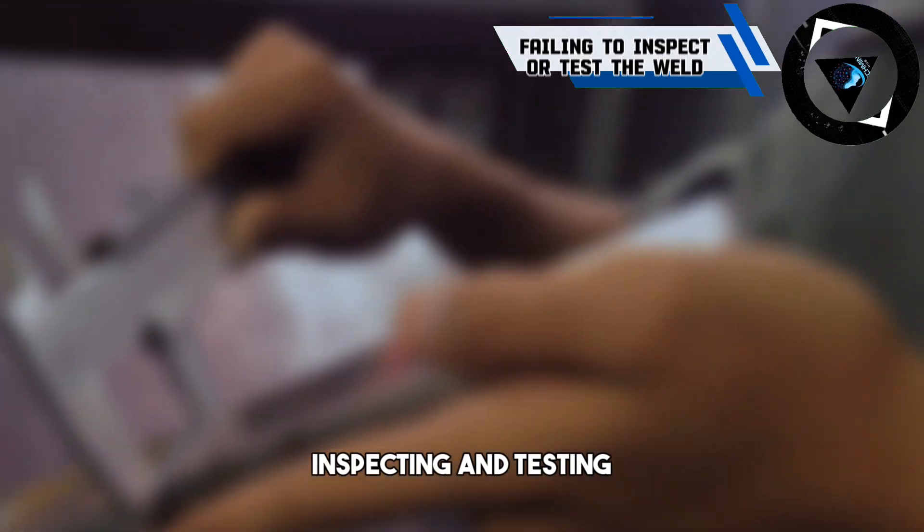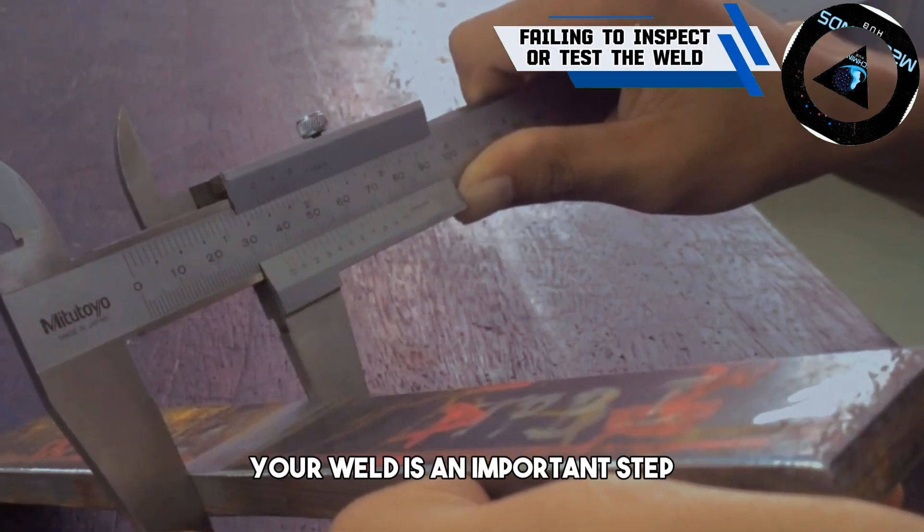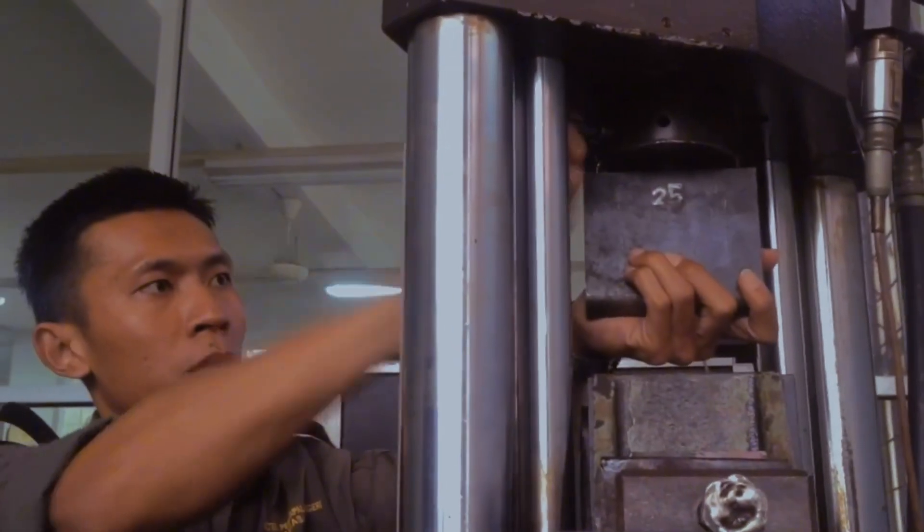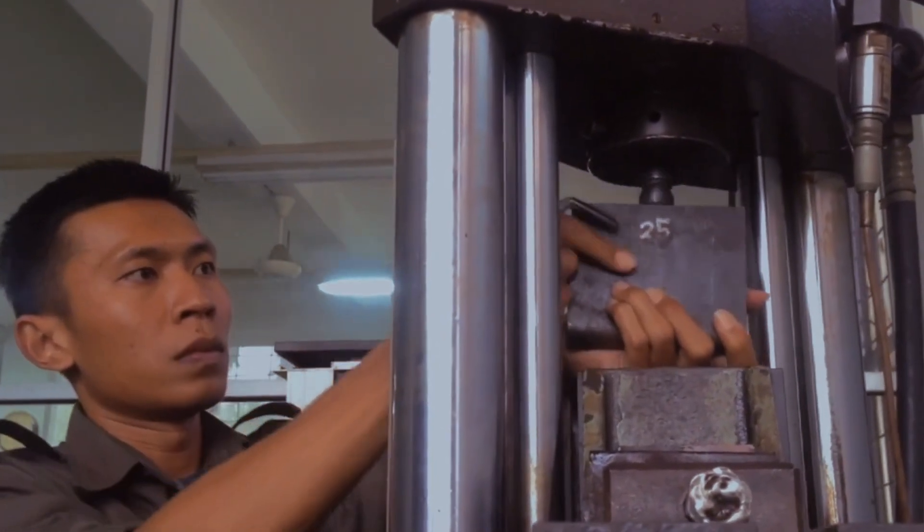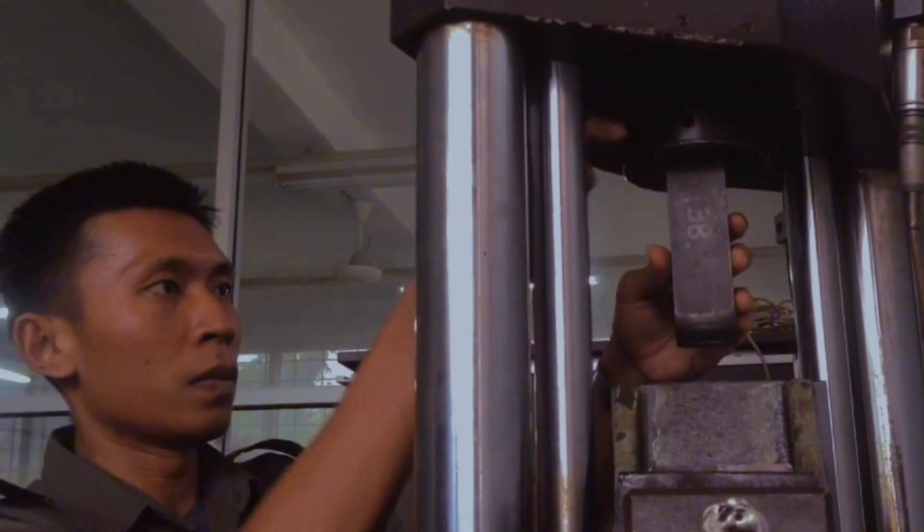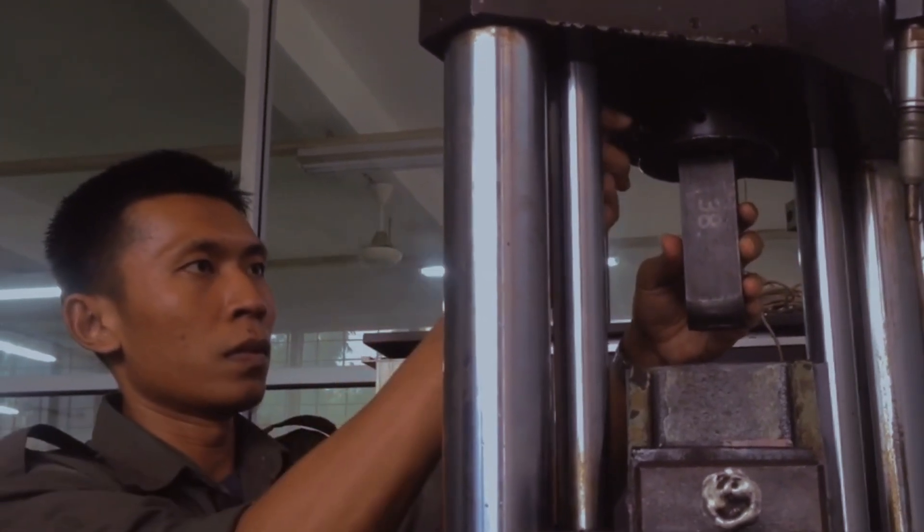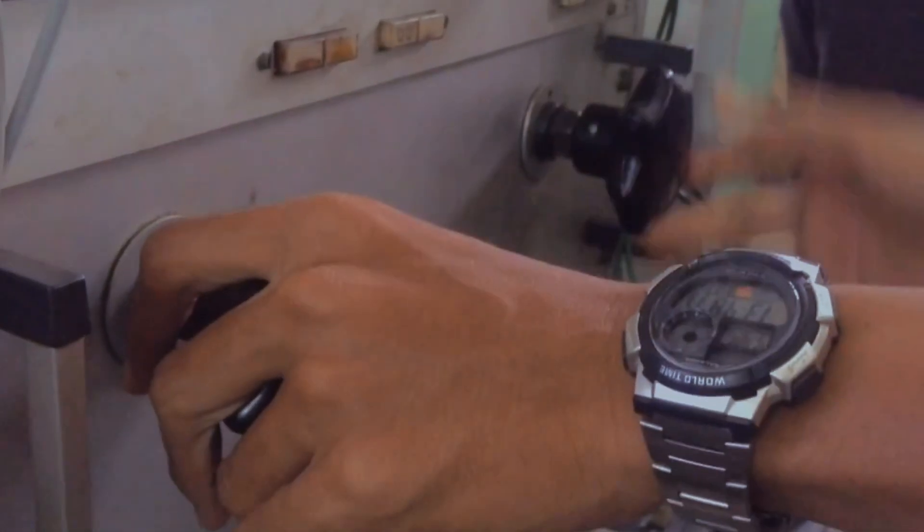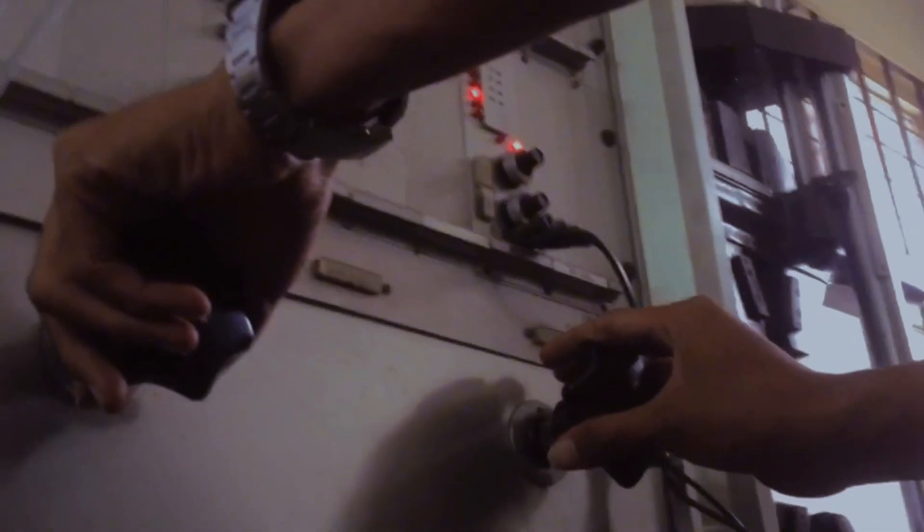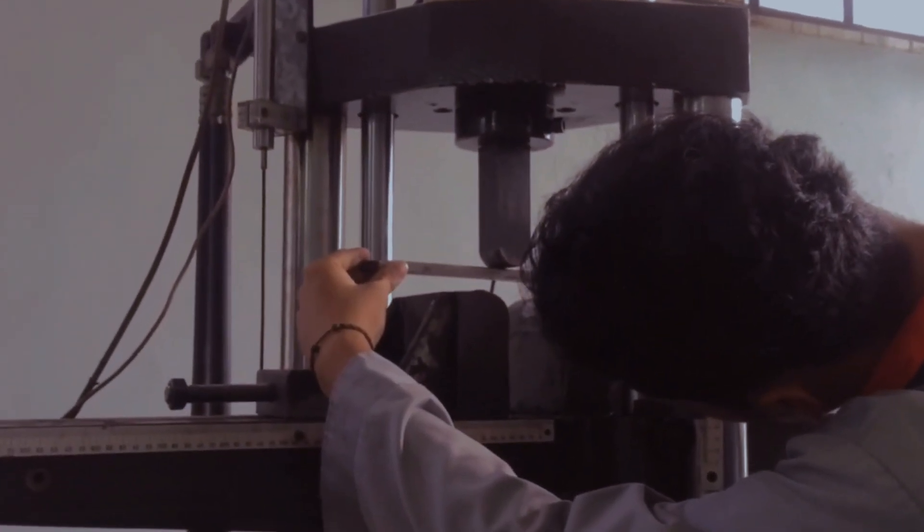Inspecting and testing your weld is an important step that you should not skip. Why? This is because some weld defects are not visible to the naked eye and can affect the safety and reliability of your welded product. Neglecting this phase could lead to oversight, necessitating the need to redo your work, incurring both time and financial costs.